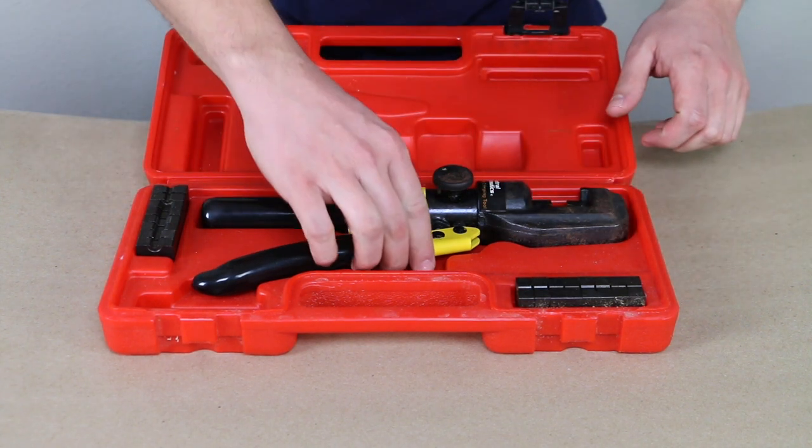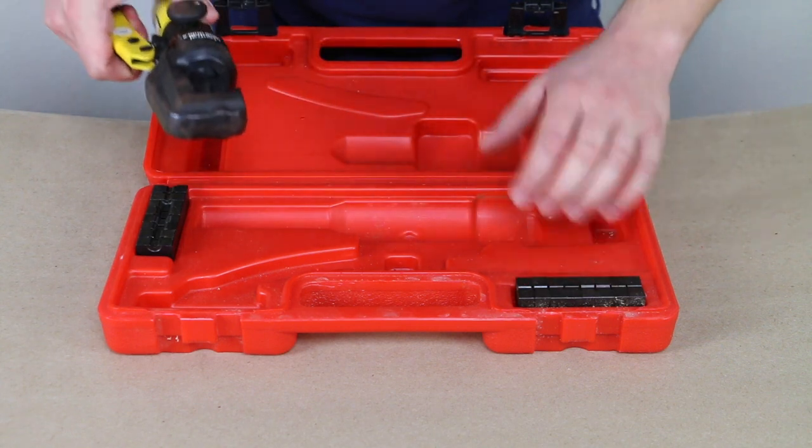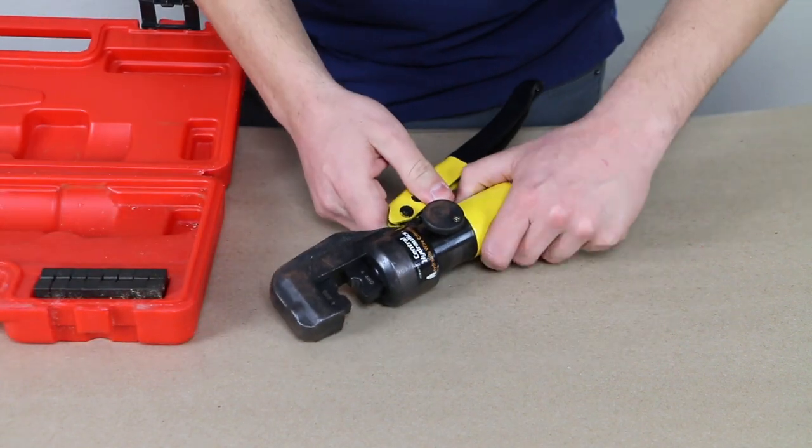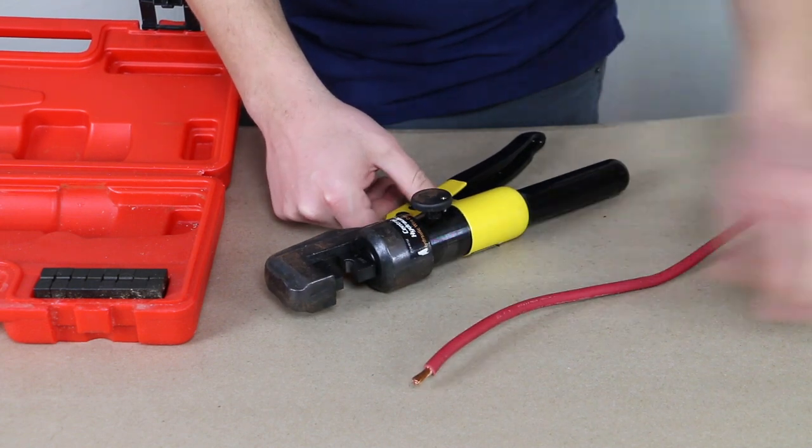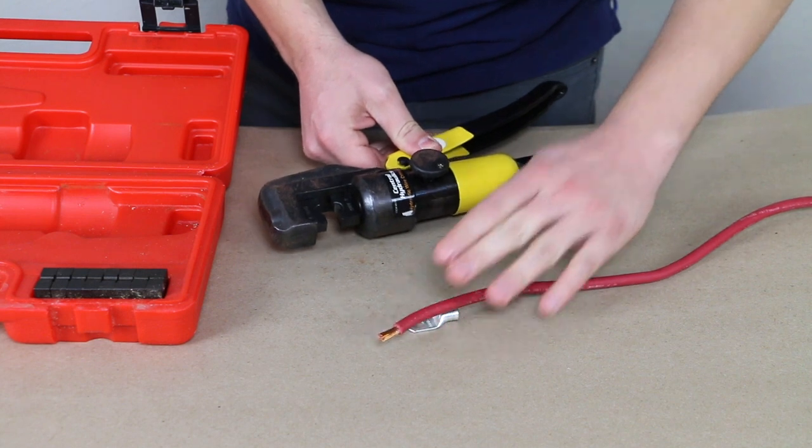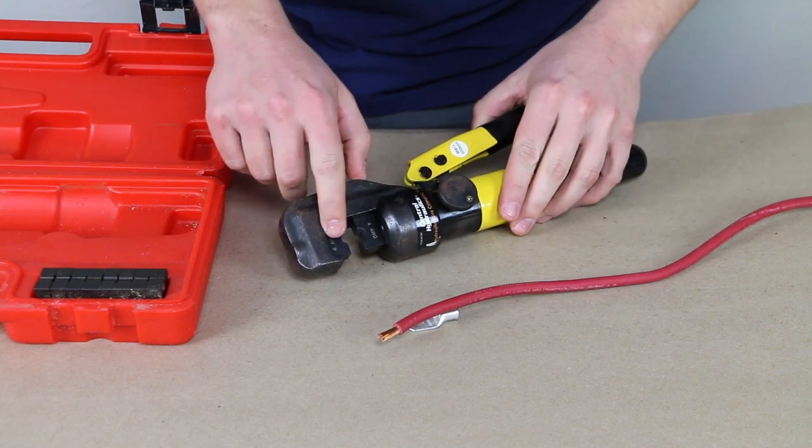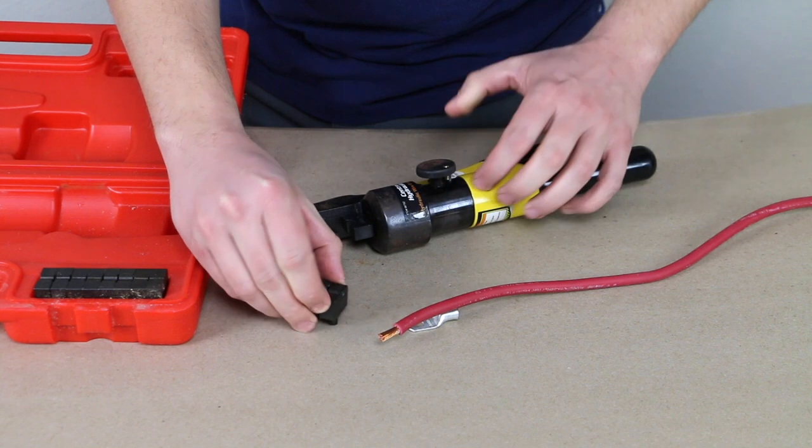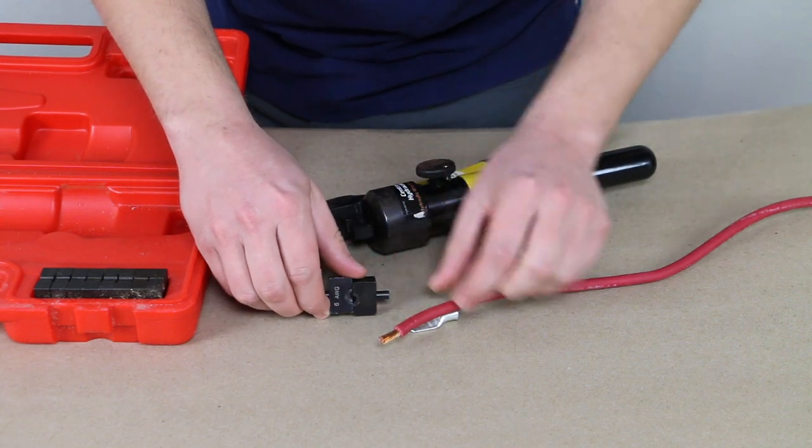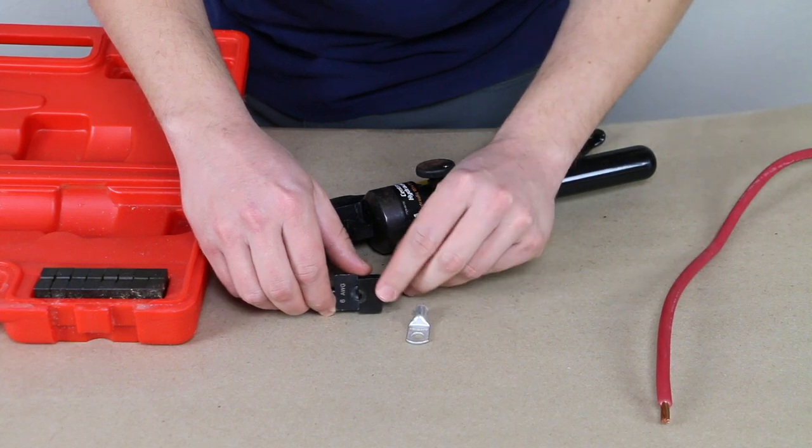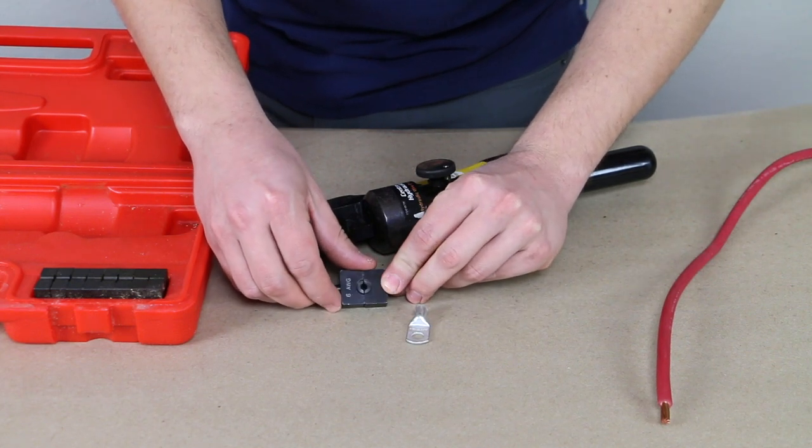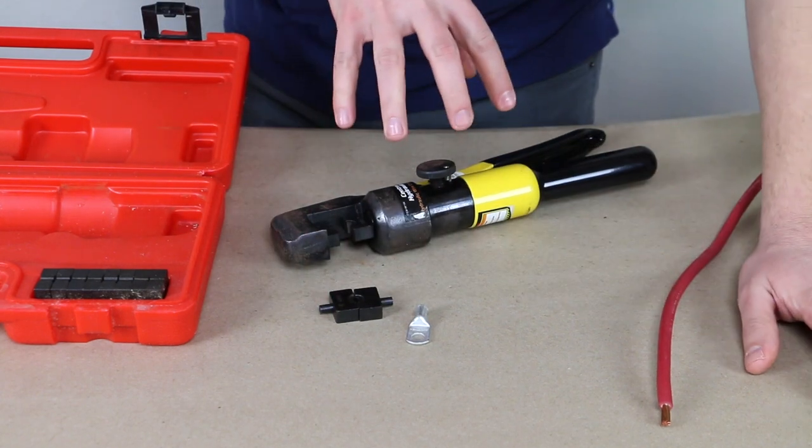So we are going to use the larger dies. Now, strike one for this crimper is we're using the same six gauge cable and terminal, but the dies, I'm going to have to use the four gauge dies. If we take a look at the six gauge dies, they are way too small for our terminal. I don't know if you can quite see, but they're just too small. End of story.